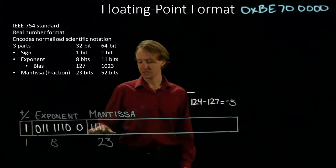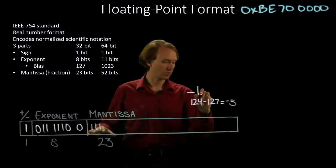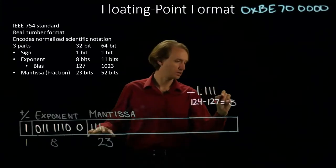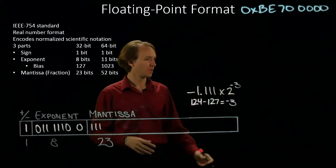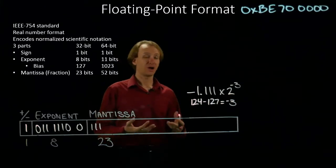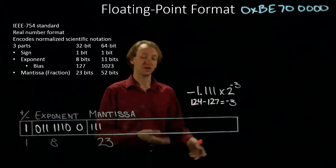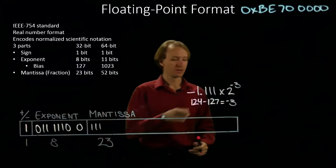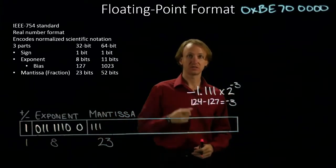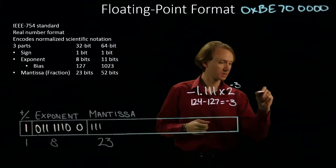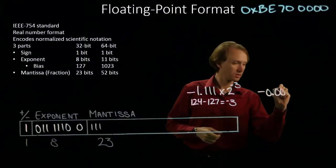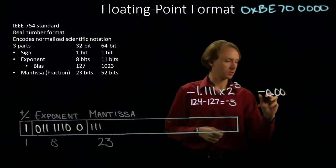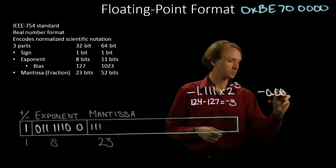And my mantissa. So I will get 1.111 times 2 to the negative 3rd. I'd like to convert this back to regular binary because I know how to convert that back to a decimal number. So I will move my binary point three places to the left: 1, 2, 3.